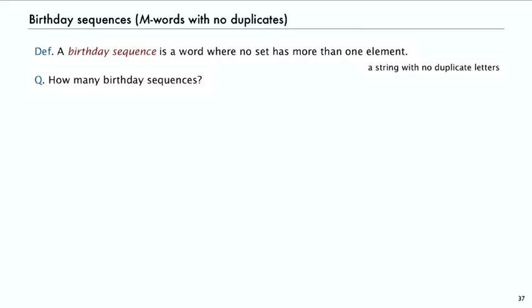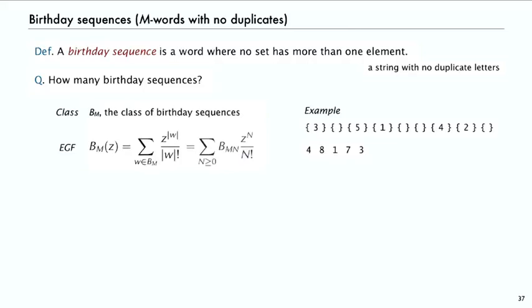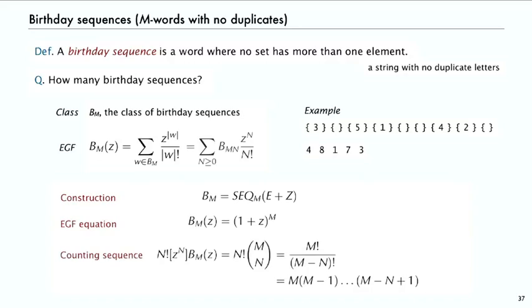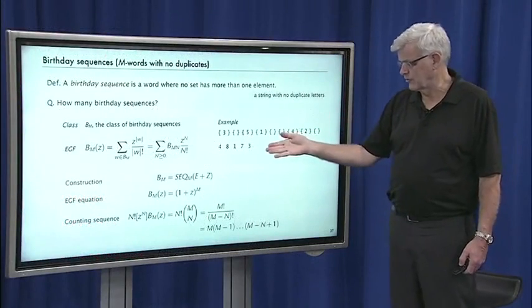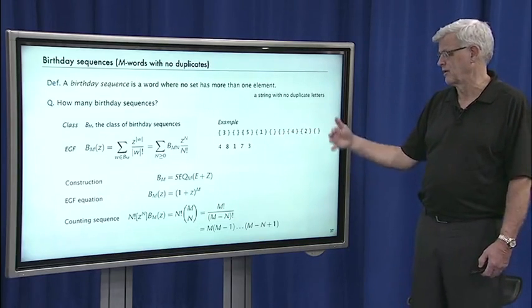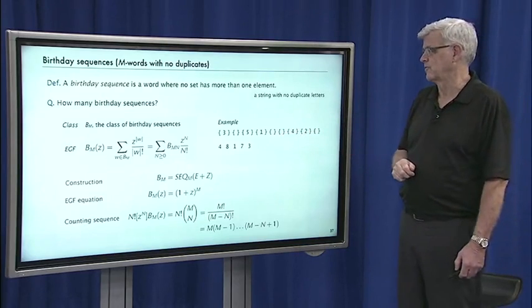Let's look at a simple modification of that basic construction to study how many birthday sequences there are. That's words where no set has more than one element. It's easy to define the class and the generating functions. The construction is simply: a birthday sequence with M letters is a sequence of length M of either empty urns or urns with one ball in them. That means the EGF of birthday sequences is just (1+z)^M. The counting sequence is coefficient of N factorial times coefficient of z^n in that, which is M(M-1)... and so forth. If you want the probability that a random word is a birthday sequence, divide that by M^N and so forth.